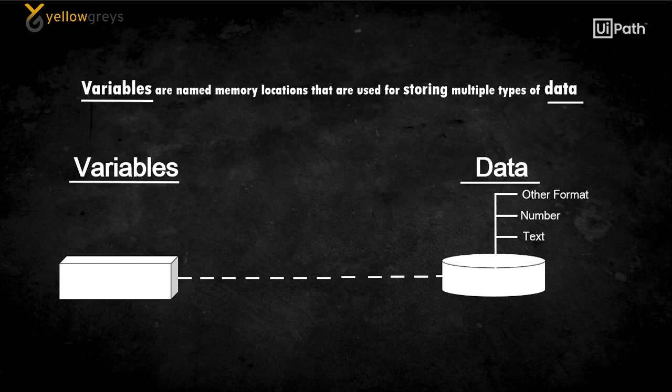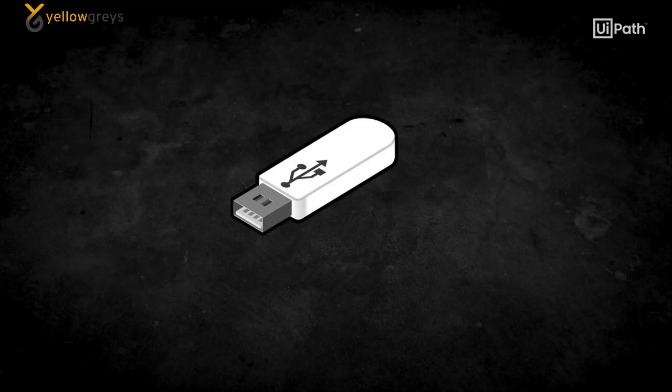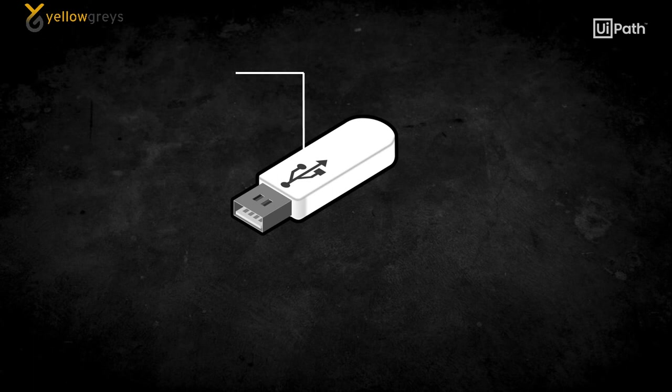Let's start with a simple example of how to understand variables and how they work. As an example, consider the empty pen drive. What can you see in this pen drive? One is the name of the pen drive and it has a certain amount of memory.